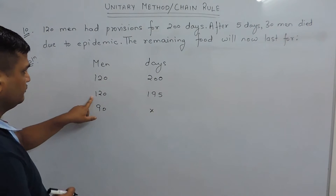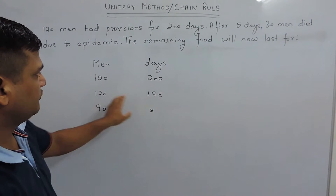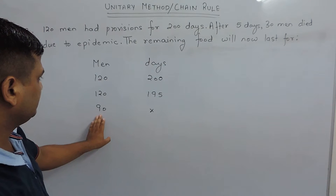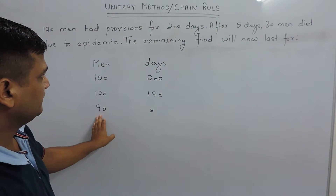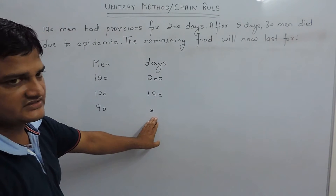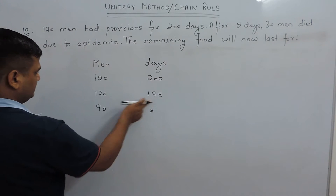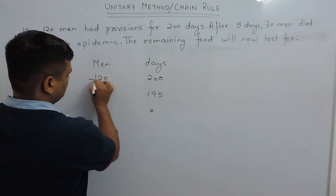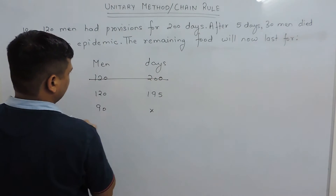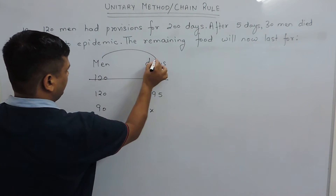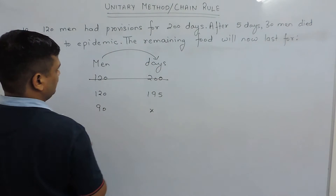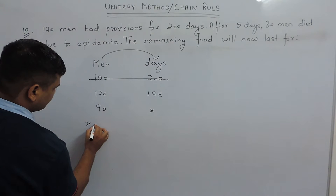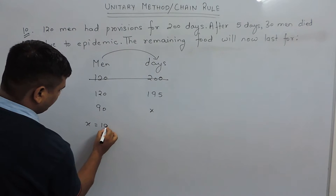The food of 120 men for 195 days is consumed by 90 men in x days. Therefore, this food is equal to this. We cancel out and find the relation of men with days. We have x equals to 195.